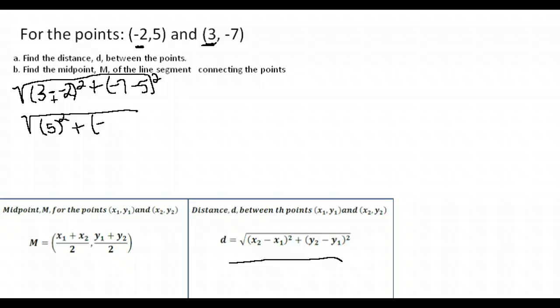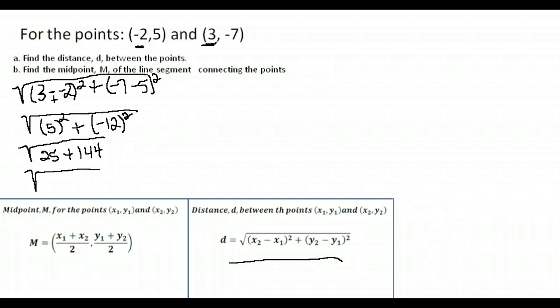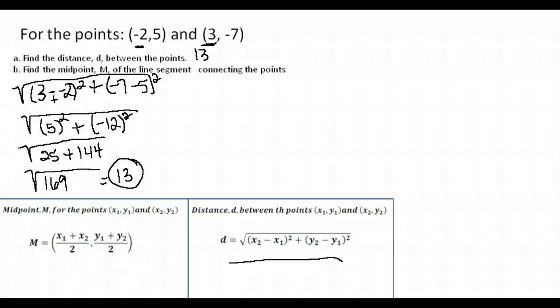Now we do our squaring: five squared is 25, and 12 squared is 144. Adding those together gives us 169, which happens to be a perfect square. The square root of 169 is 13. So the distance between the two points is 13 units.